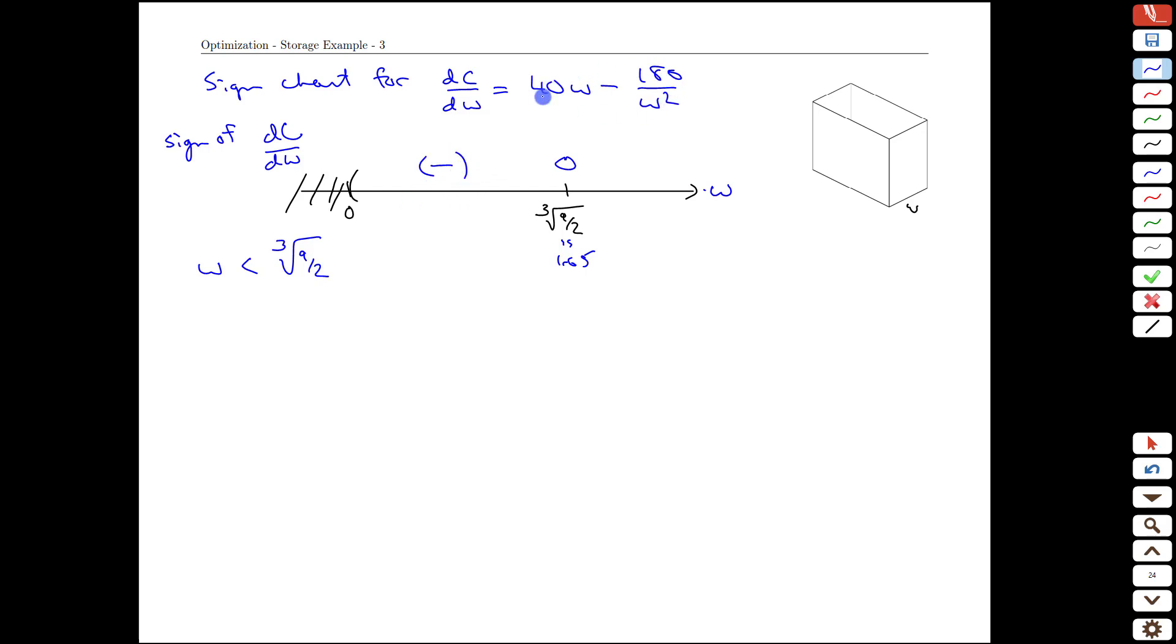And if you do the same thing for w's that are bigger than that threshold, cube root of 9 halves, you're going to get a derivative that is positive. As w gets bigger, this term, the positive term, gets larger and this gets smaller. So you'll have that.